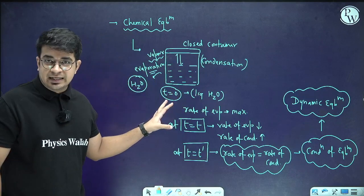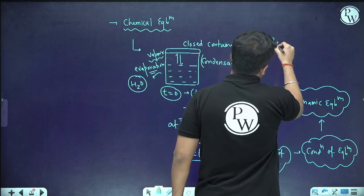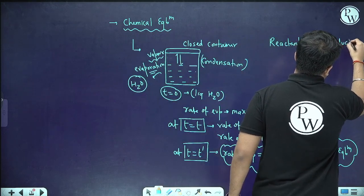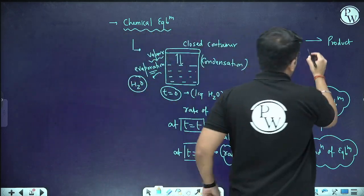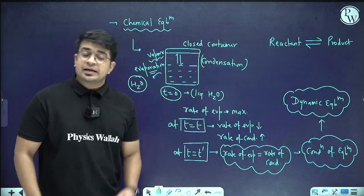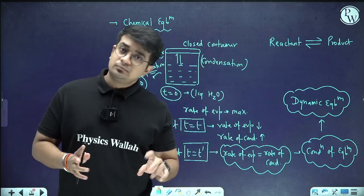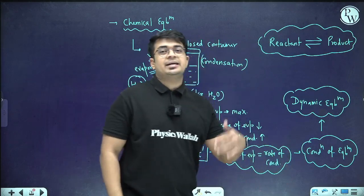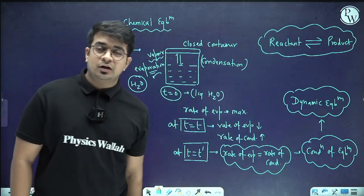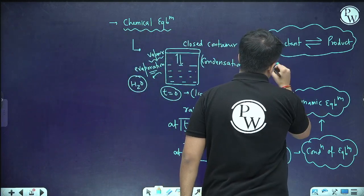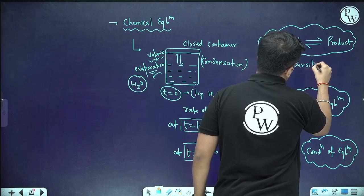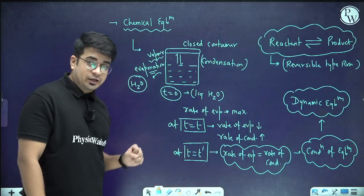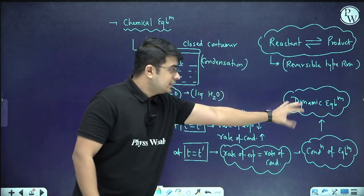Liquid water is the reactant and water vapors are the products. There is a reaction in which reactant is converting into product, but because of the closed container, the product is converting back into reactant. This is a special kind of reaction that never goes to completion — reactant converts to product and product converts back to reactant. This type of reaction is basically known as a reversible type reaction.